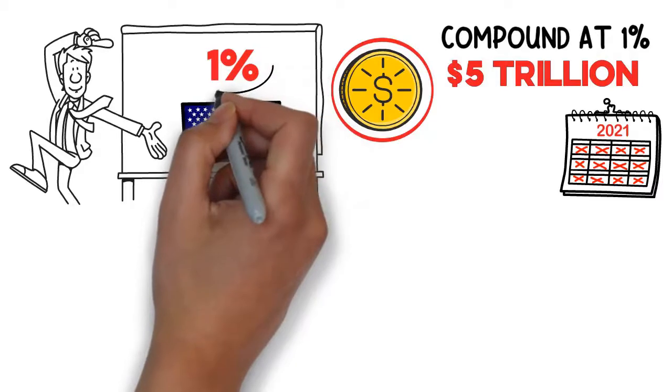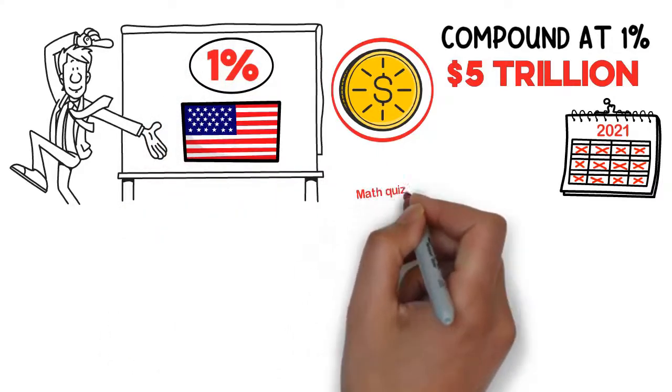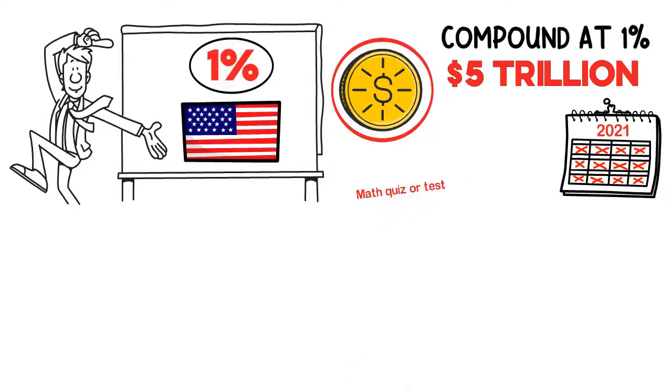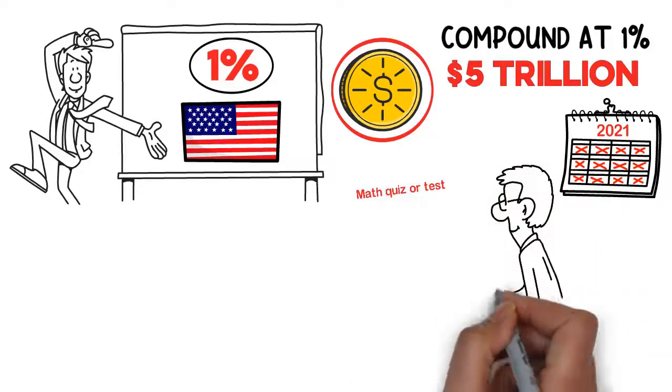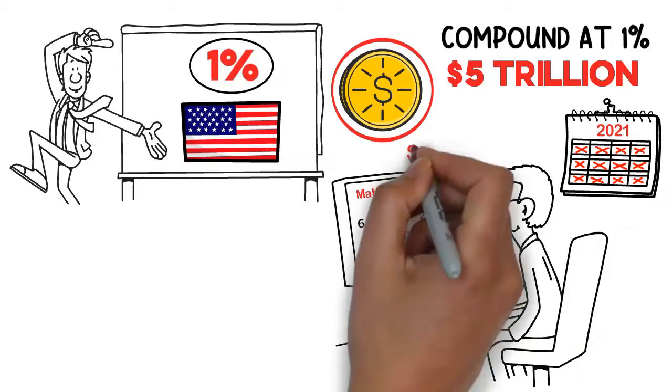Now, let's apply this same 1% principle to math scores. Suppose you have a math quiz or a math test coming up. Before the test, you're able to take practice exams. Let's say on your first try on a practice quiz or test, you score 75, which for most schools is a C grade.